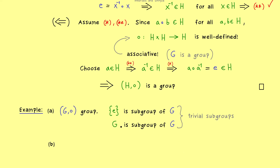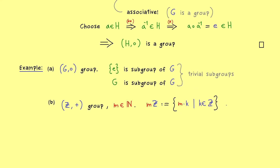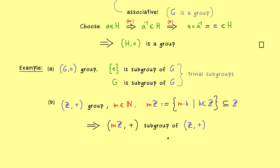For a more concrete example, take the integers Z. We can ask: what are the possible subgroups of Z? For any natural number m, define the subset mZ as the set of all multiples of m — that is, m times k for k in Z. This is a non-empty subset of the integers, and it is easy to check the two properties, so for every m the set mZ is a subgroup of Z. We immediately find infinitely many subgroups of the integers.